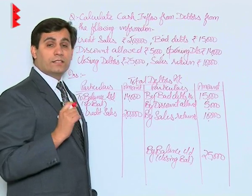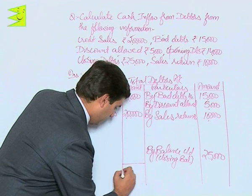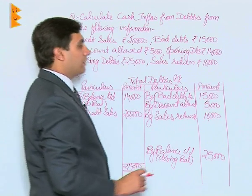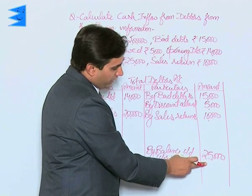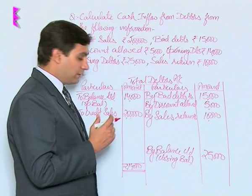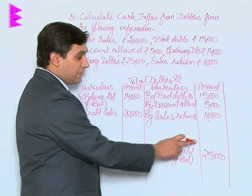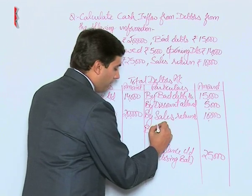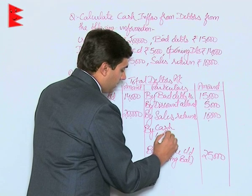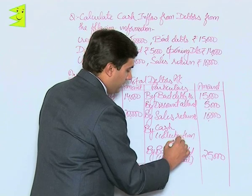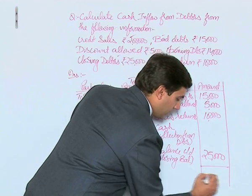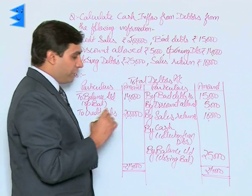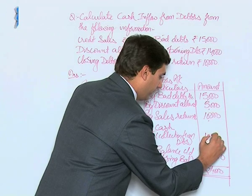Now let us total this out. The total on the debit side is 2,14,000. The credit side totals: 20, 30, and 25 — coming to 55,000. The balancing figure is 2,14,000 minus 55,000, which equals 1,59,000. This is written as: by cash — collection from debtors — rupees 1,59,000.